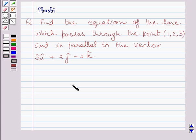First of all, let us understand that the vector equation of a line passing through a point and parallel to a given vector b is given by r vector equals a vector plus lambda multiplied by b vector.